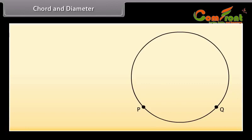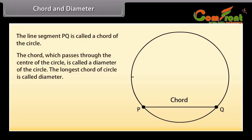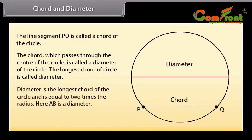Chord and diameter. If you take any two points on the circle, say P and Q, and join them, then the line segment PQ is called a chord of the circle. The chord which passes through the center of the circle is called a diameter. Diameter is the longest chord of the circle and is equal to two times the radius. Here we can see that AB is a diameter.